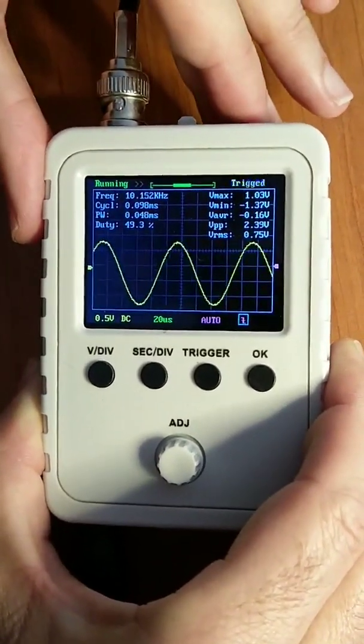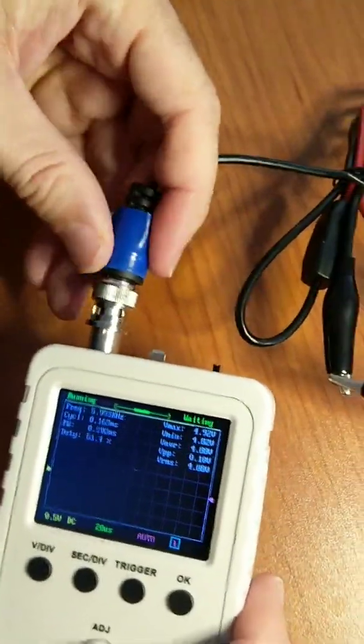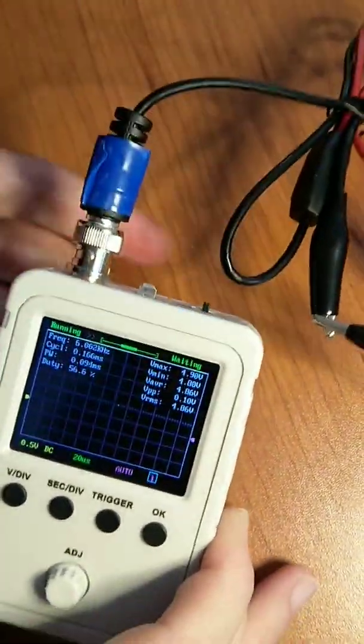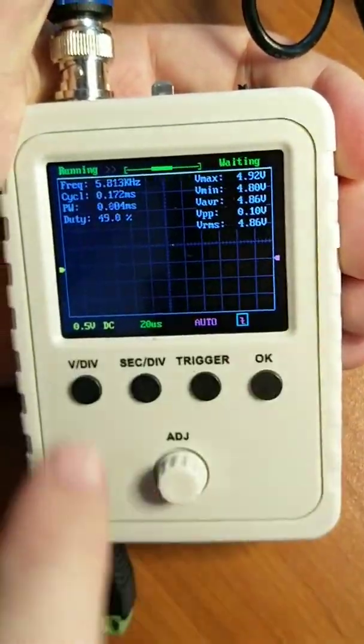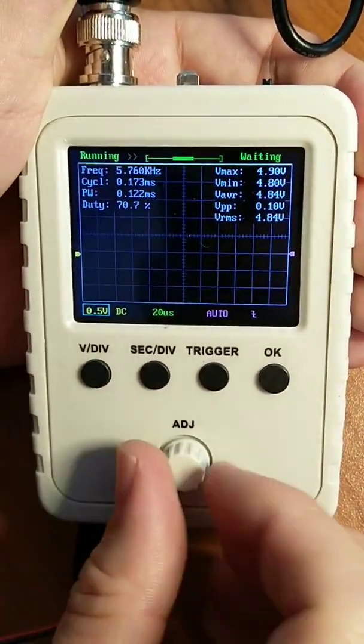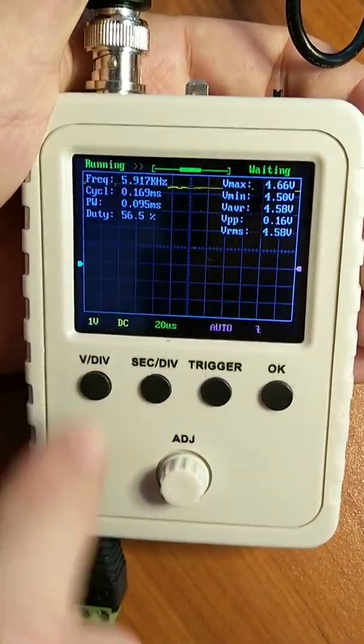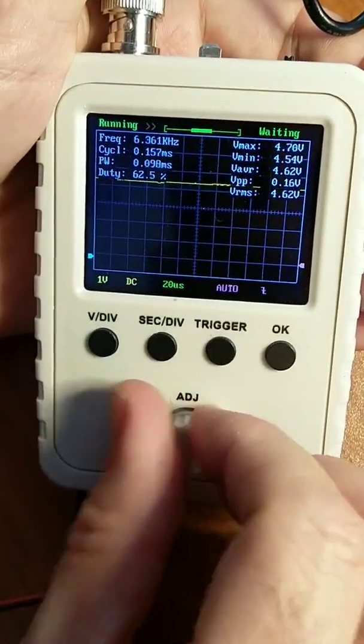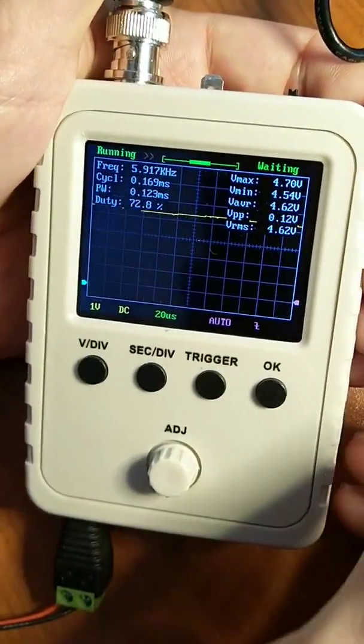So we can see there it says 4.9 volts, but we don't see the signal. That's because it's out of scale. I just need to press volts per division and tune it down a bit. There we can see. I can press it one more time and set it lower so we can actually see the voltage. It's 4.7 volts.